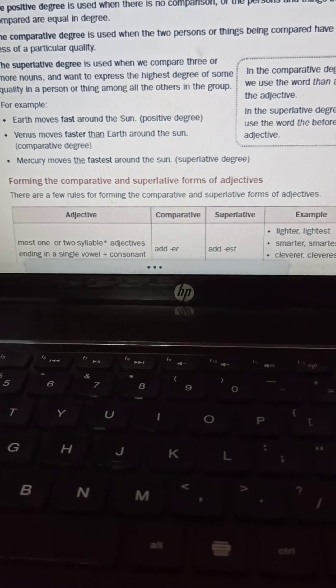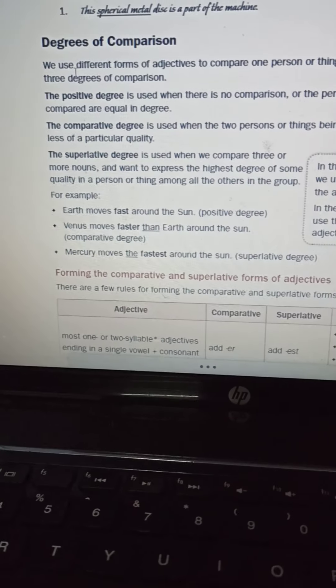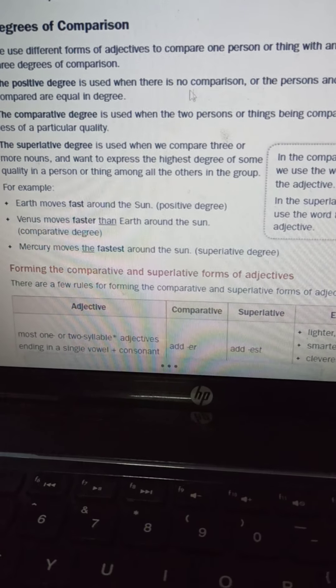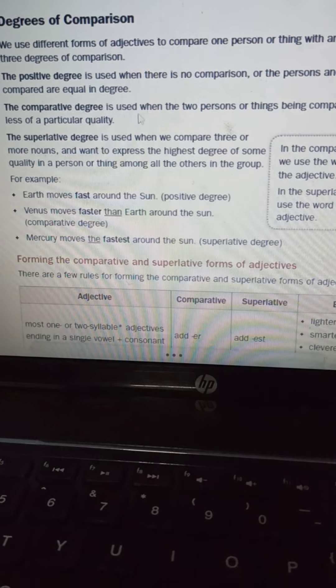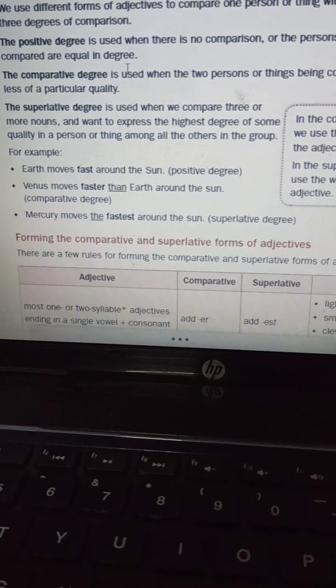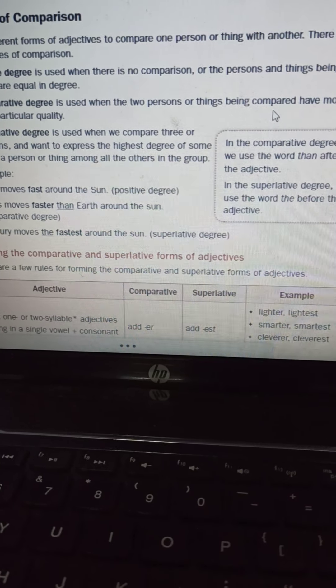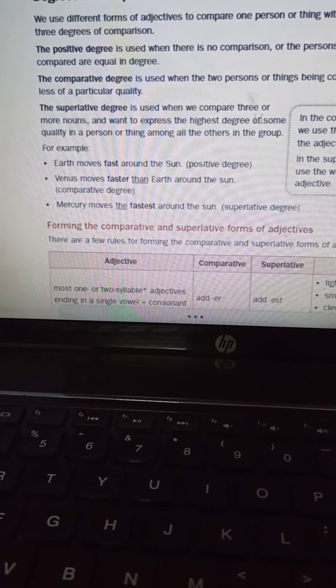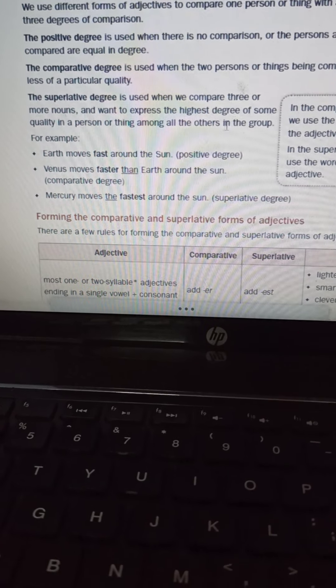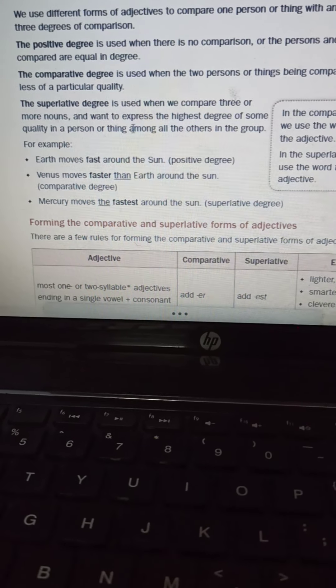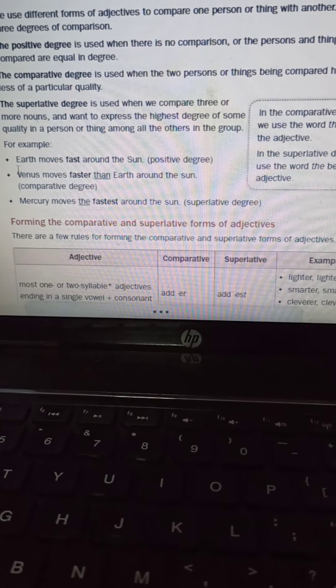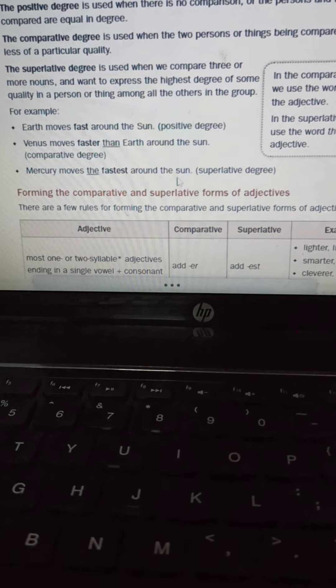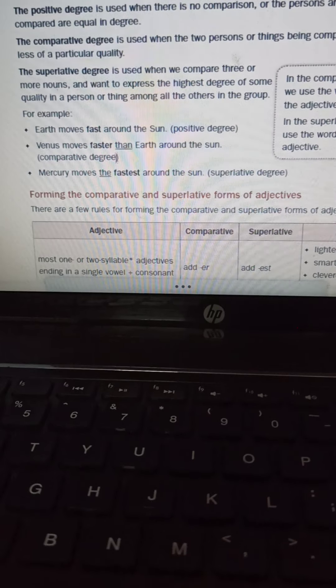Then let us come to now the degree of comparison. We use different forms of adjectives to compare one person or thing. The positive is used when there is no comparison. As I told you, the person is tall. The comparative degree is used when two persons or things are being compared - that is, he is taller than his friend. And the third is the superlative degree is used when we compare three or more nouns and want to express the highest. For example, Mercury moves the fastest around the sun.